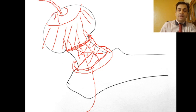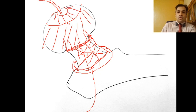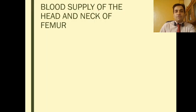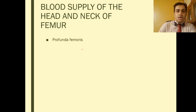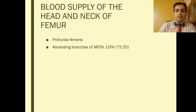This foveal branch provides blood to the 25% para-foveal area near the apex of the head. A quick revision: profunda femoris artery gives medial and lateral circumflex femoral arteries in a 3:1 ratio.